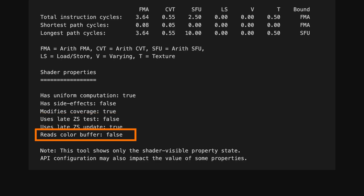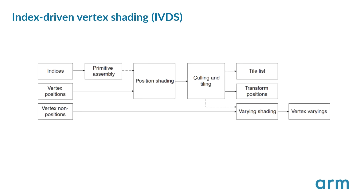This shows if a fragment shader contains logic that programmatically reads from the color buffer. Shaders that read from the color buffer in this way are treated as transparent, and cannot be used as hidden surface removal occluders. Mali GPUs in the Bifrost and Valhall families use index-driven vertex shading, which compiles vertex shaders into two binaries: a position shader, which computes only position and is executed for every index vertex, and a varying shader, which computes the remaining non-position vertex attribute outputs, and is only executed for vertices that are part of a visible primitive that survives culling.